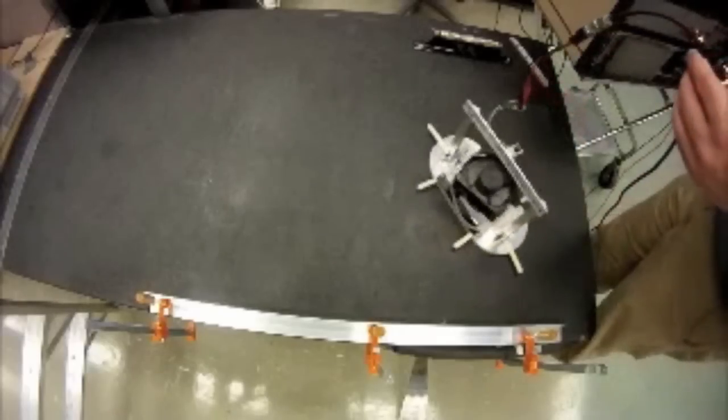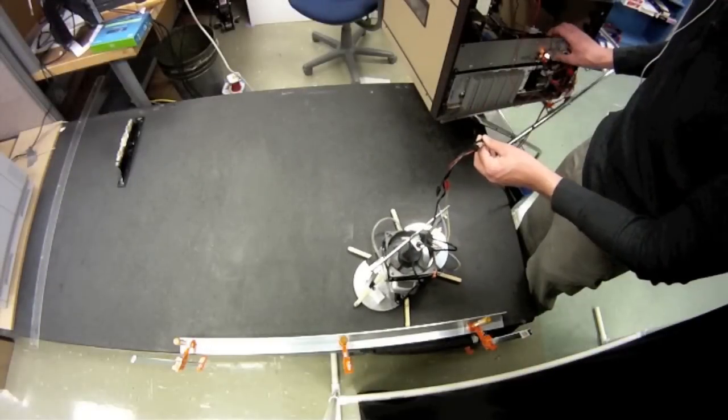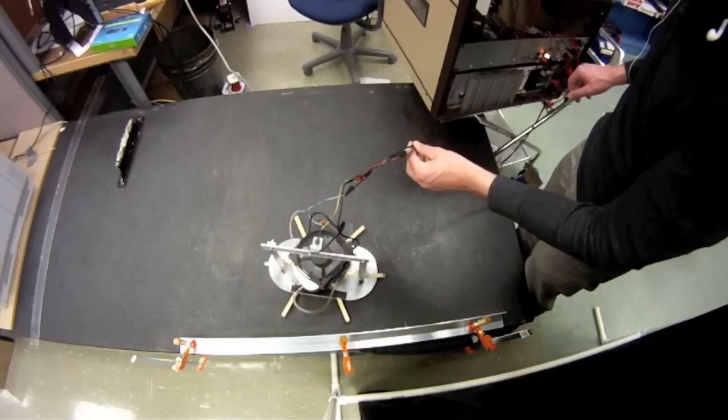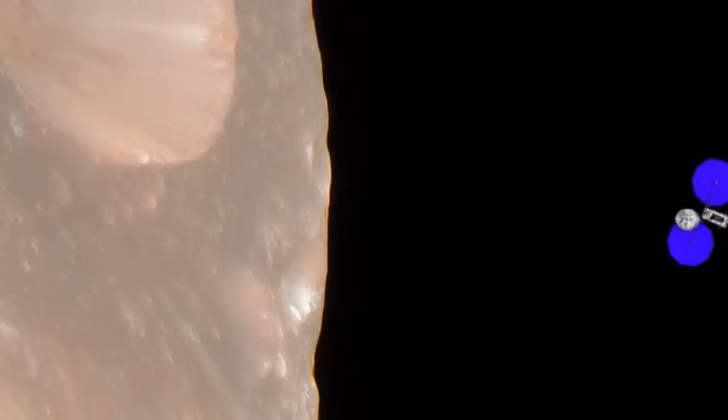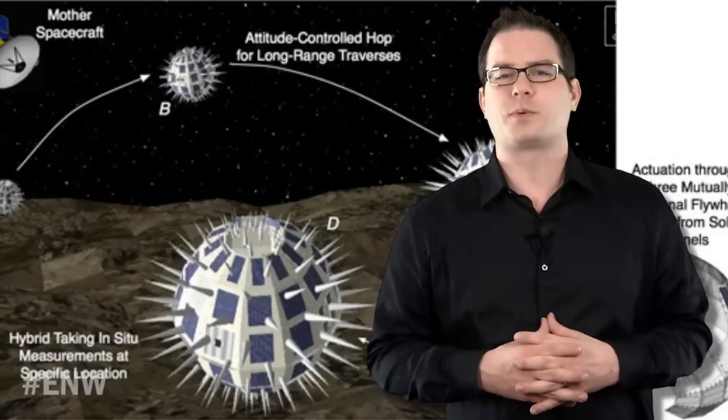The mother ship, also known as the Phobos Surveyor, relies on a synergistic relationship between the surveyor and the rovers it houses, the spiky balls researchers have dubbed hedgehogs. Flanked by two umbrella-shaped solar panels, the surveyor would release as many as six hedgehogs, each a half a meter in diameter, over the course of several days. Inside each spiky shell are three rotating disks, set at right angles from one another.